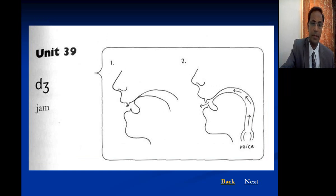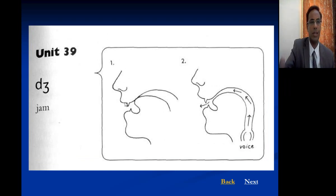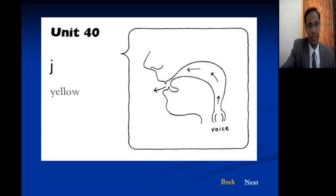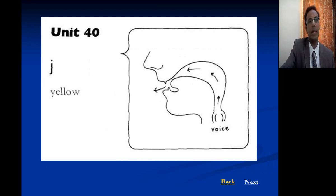Another affricate sound is the DJ sound, as in 'jam' — it is composed of D plus the soft CH sound. The next sound is Y as in 'yellow' — it is an approximant sound.